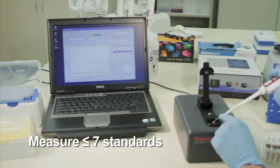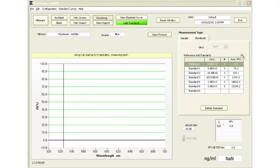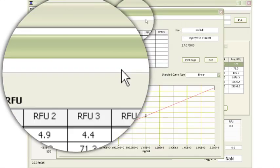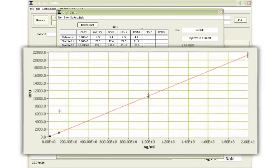Up to 7 standards may be used. The software is designed to store up to 5 replicates for each standard. Replicates of the standards are averaged to generate a standard curve from which the sample concentrations are automatically determined.